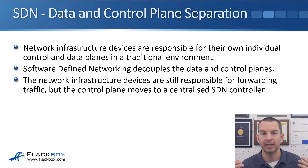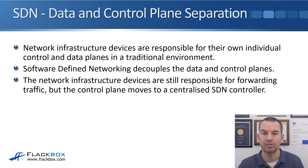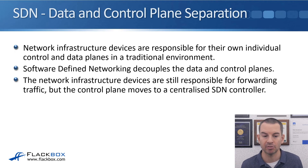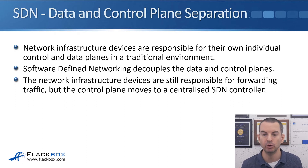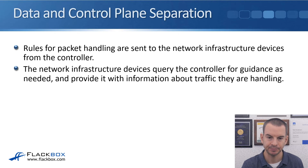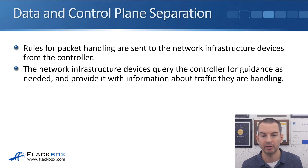With Software Defined Networking, it breaks with the traditional model. SDN decouples the data and control planes. Rather than having both planes running individually on each network device, with SDN the control plane is moved off to a centralized SDN controller. The network infrastructure devices are still responsible for forwarding traffic — controlling their own data plane — but the control plane intelligence moves to the centralized SDN controller. Rules for packet handling are sent to the network infrastructure devices from the controller, and the devices query the controller for guidance as needed and provide it with information about traffic they are handling.